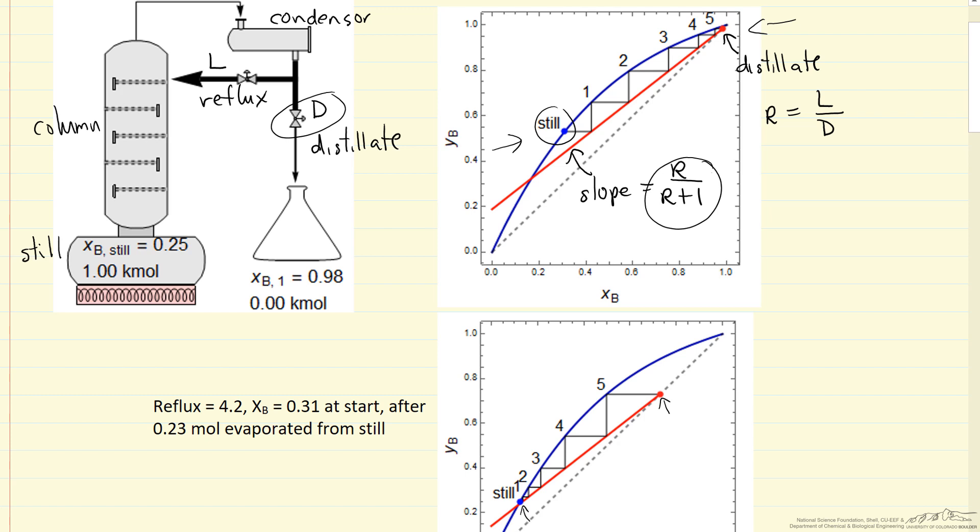So the diagram, the operating line moved, the slope has not changed. And so this continuous change we take into account when we do the calculations to determine what our distillate composition would be for a given condition.